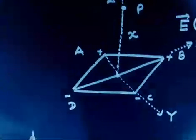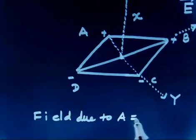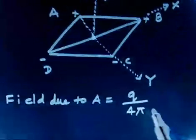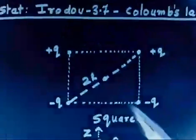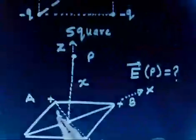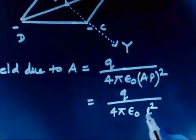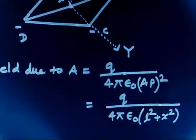Let us find the electric field due to A. The magnitude of field due to A is Q divided by 4π ε₀ r². The charge is positive. The distance r is from A to P. Since the half-diagonal is L and the height is x, AP equals √(L² + x²). So the magnitude of field due to A is Q divided by 4π ε₀ (L² + x²).